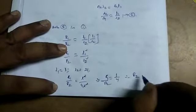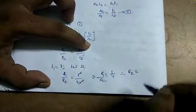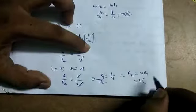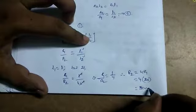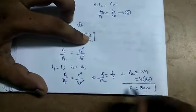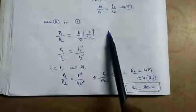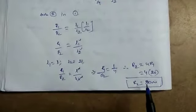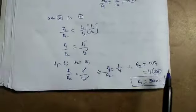Therefore R2 equals 4 times R1. Since R1 equals 20 ohms, R2 equals 4 times 20 equals 80 ohms. Hence, when the length is increased to twice its original length, the resistance of the wire in the new situation is R2 equals 80 ohms.